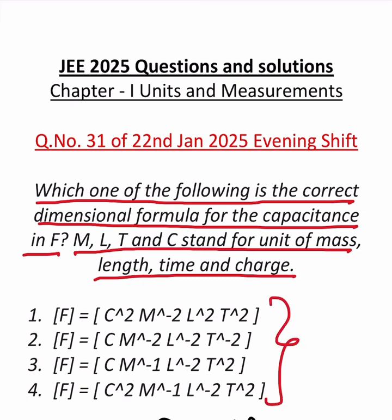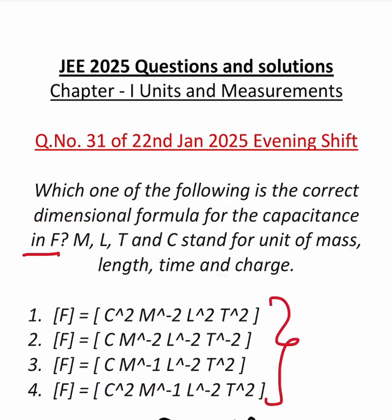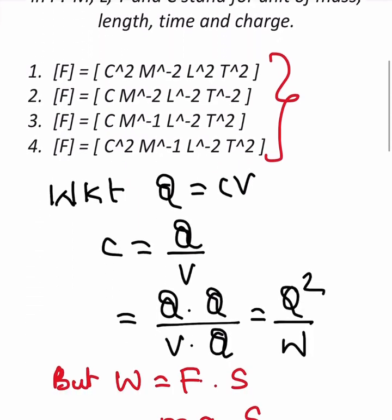Now we all know the very famous formula Q is equal to CV. From here you can take capacitance is equal to Q by V, that is charge by potential. And what we are going to do now is multiply numerator and denominator by Q. That is no change because we are multiplying with the same quantity. Therefore it will become Q squared divided by VQ.